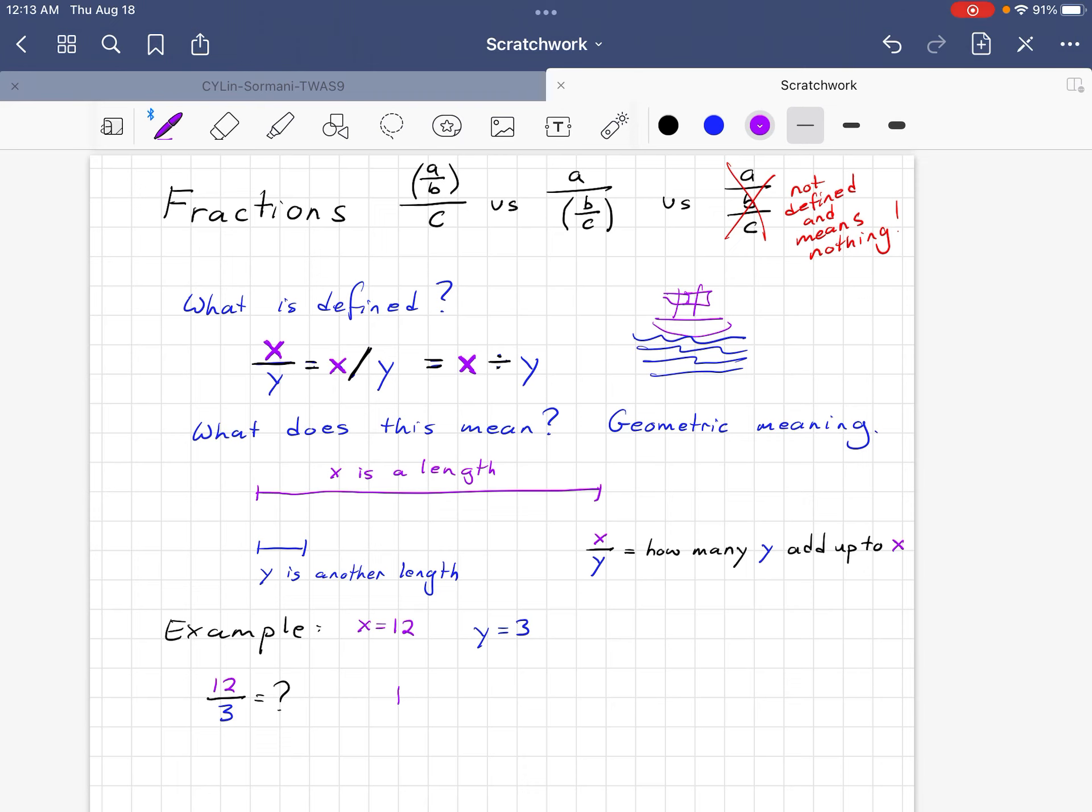So you take your 12, my length 12. 1, 2, 3, 4, 5, 6, 7, 8, 9, 10, 11, 12. Let me double check. 1, 2, 3, 4, 5, 6, 7, 8, 9, 10, 11, 12. Okay. So that's my X. That's 12.